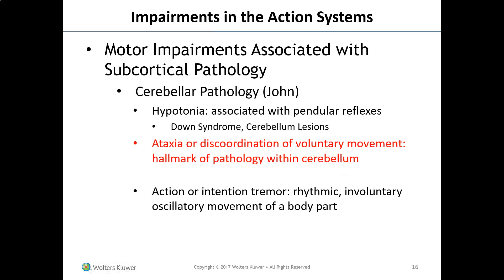Moving to motor impairments associated with subcortical pathology: John has cerebellar pathology. Cerebellar pathology produces hypotonia associated with pendular reflexes — Down syndrome is an example. Ataxia, or discoordination of voluntary movement, is the hallmark of cerebellar pathology. John also demonstrates action or intention tremor — rhythmic, involuntary, oscillatory movement of a body part.